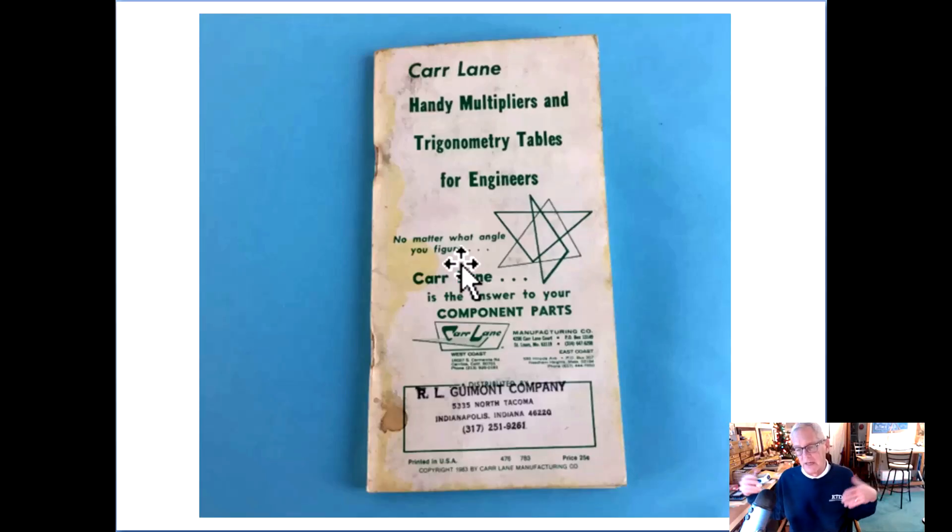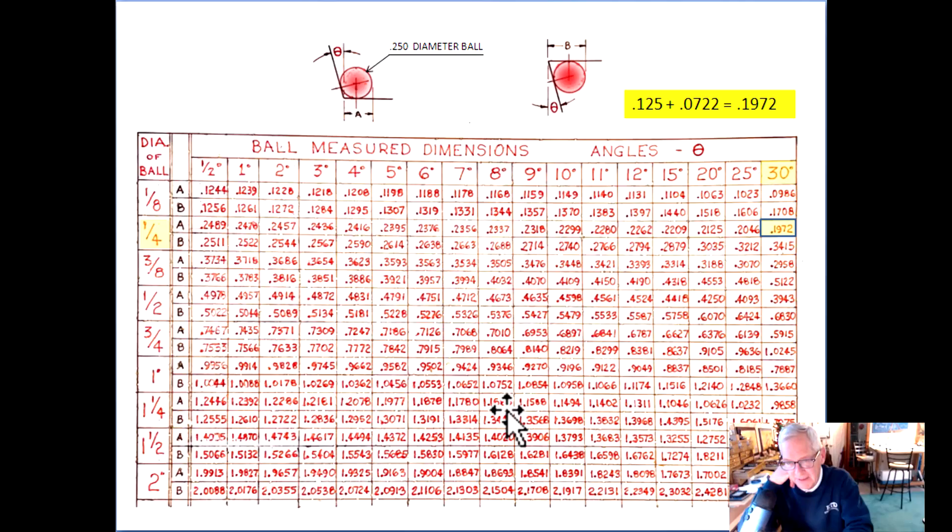Now if you really want to go old school and get the Carr Lane book, these were everywhere back in the days. They actually sent them to their dealers and you would put your stamp on there. Mine happens to say August Industrial Supply, I think. They would let you put your own stamp in there and you'd hand these out to your customers. But wait there's more! I did so many ball dimensions back in those days I made this chart. Yes that is my handwriting, kind of crazy right?